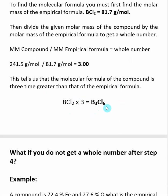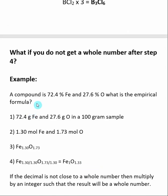Remember that percent compositions can only give us an empirical formula. To determine the molecular formula, we need to know the molecular weight of the true compound. Now, what happens if you do not get a whole number after dividing through? An example is a compound that is 72.4% iron and 27.6% oxygen, for which we want to determine the empirical formula.